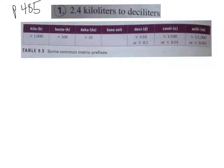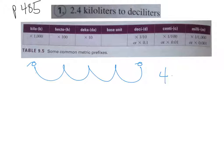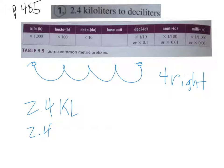On page 485, number one, we're going to convert 2.4 kiloliters to deciliters. We have kiloliters over here at kilo, and we want to go to deciliters at deci. So we go 1, 2, 3, 4 to the right. We take our 2.4 kiloliters and move that decimal four times to the right. We open up some zeros, and we end up with 24,000 — and these are now deciliters, dl.